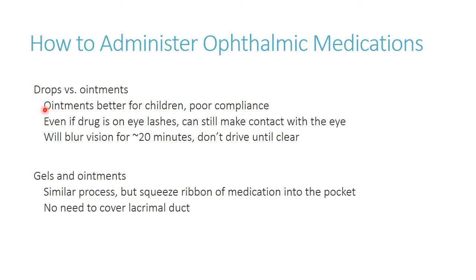Drops versus ointments: ointments tend to be better for children because of poor compliance — even if you just get the ointment on the eyelashes, enough drug still makes contact as they blink, so you're probably getting adequate concentration. The downside of ointments is that they tend to blur vision. If the patient needs to drive, that's not going to be ideal until their vision clears up. There are pluses and minuses on both sides. With gels or ointments, you're squeezing a ribbon — about half an inch — onto the eye. No need to cover the lacrimal duct since the viscous formulation won't wash away immediately.